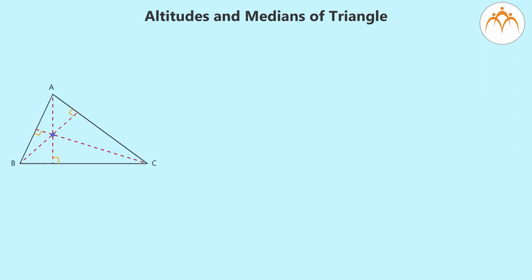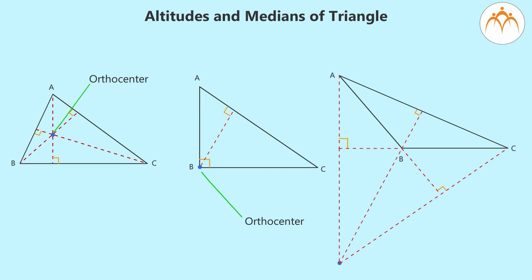For acute angle triangle, orthocentre is inside the triangle. For right angle triangle, orthocentre is the vertex at which right angle is formed. And for obtuse angle triangle, orthocentre is outside the triangle.